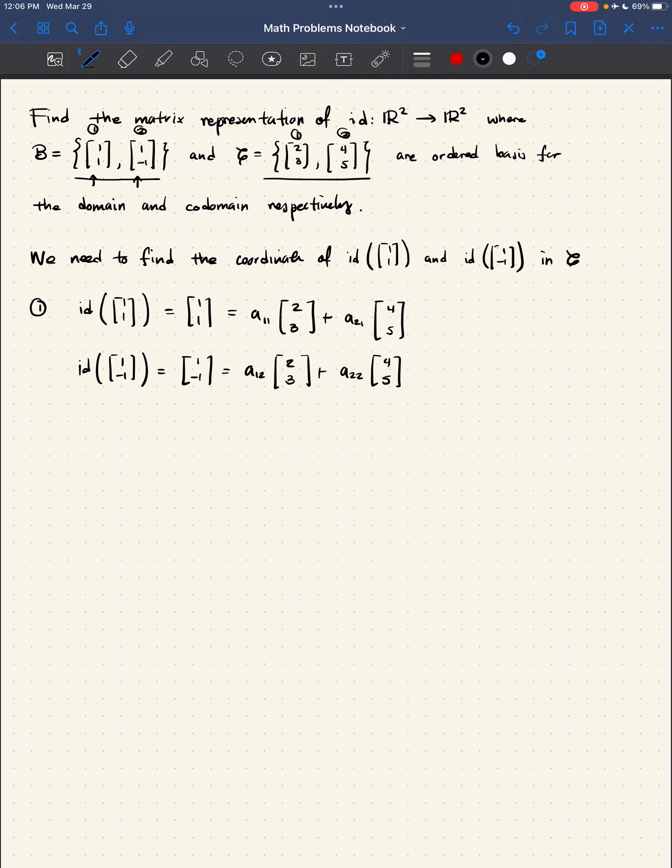Well, from this, what we're going to do is obtain a system of equations, as it's customary. We'll write them, the first one will correspond to this particular, and the second one will look like this. So now, how does it look? Just as follows: 2a₁₁ + 4a₂₁ = 1, also 3a₁₁ + 5a₂₁ = 1.